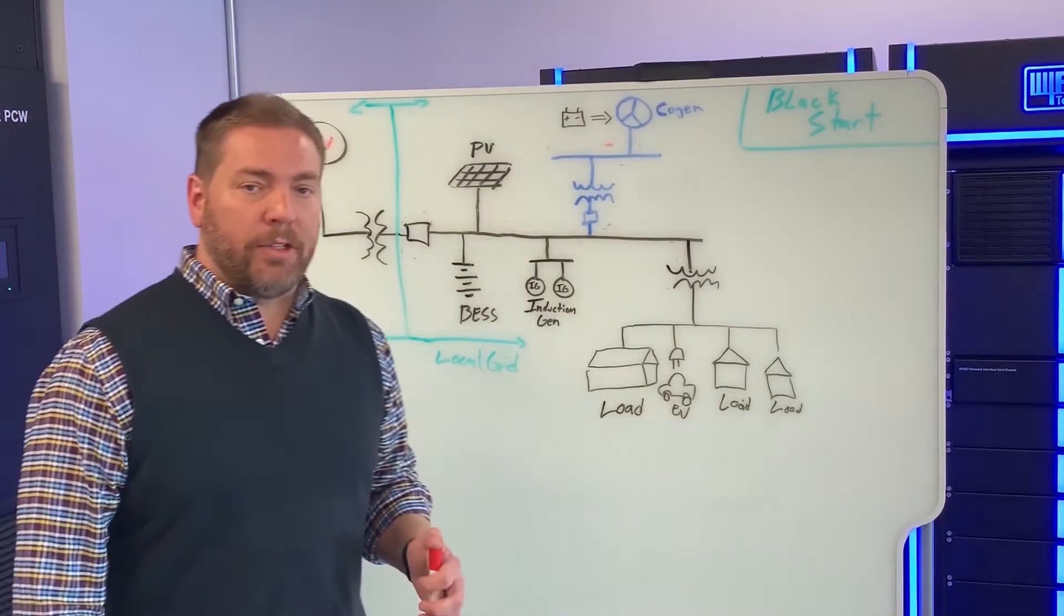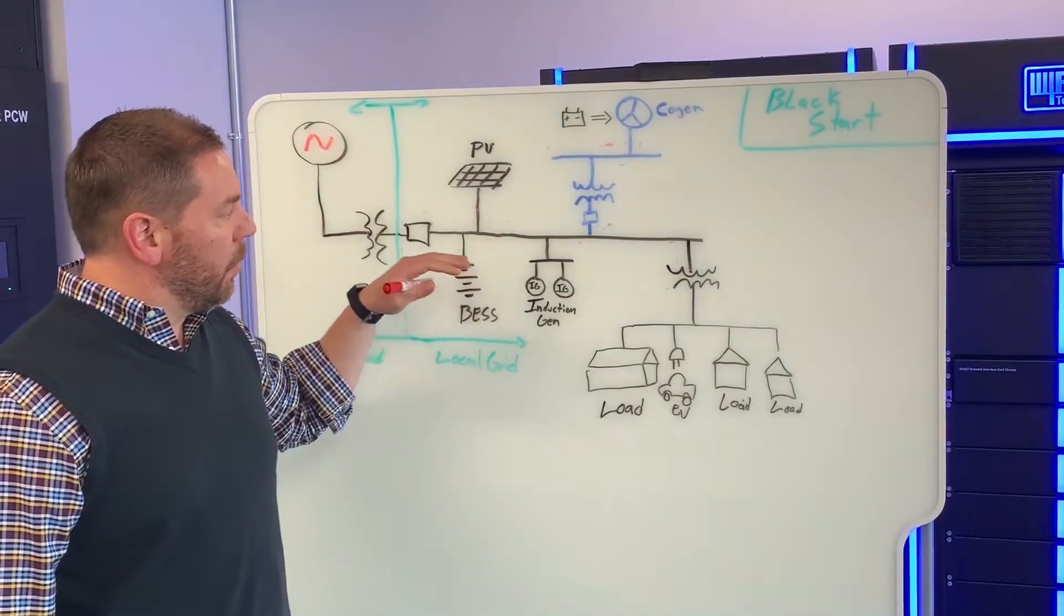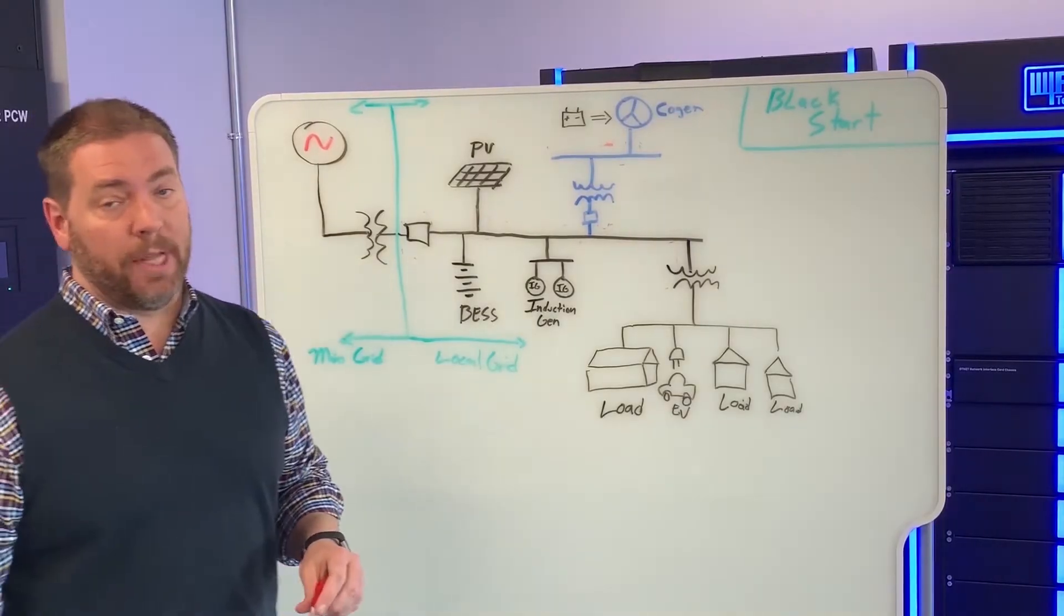Well, Black Start is the ability to, in the case of this DER example, restore power to the local grid in the event that the main grid has gone down or is not available.